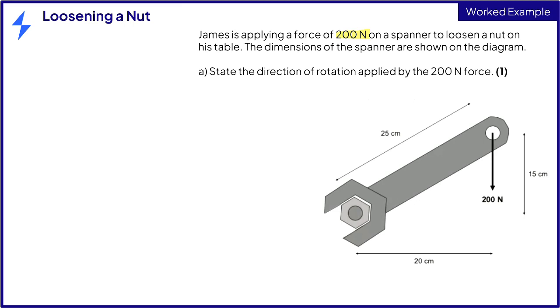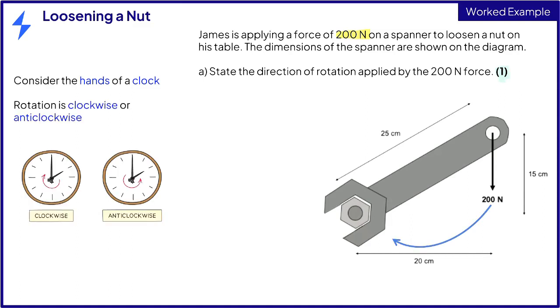Part A: state the direction of rotation applied by the 200 newton force for one mark. Look at the diagram carefully and imagine the clock face. Drawing an arrow continuing the motion of the spanner shows that this is a clockwise rotation for one mark. Extending the force arrows is the key to understanding what is happening, especially in more complex moment questions.